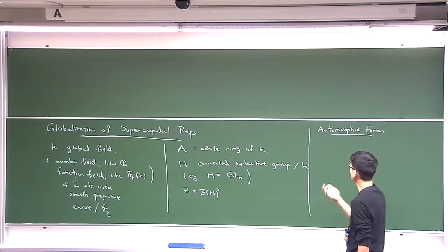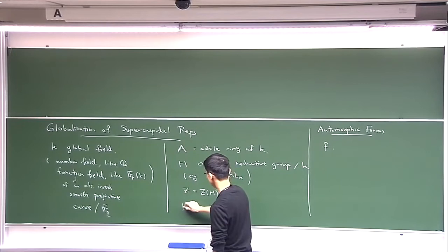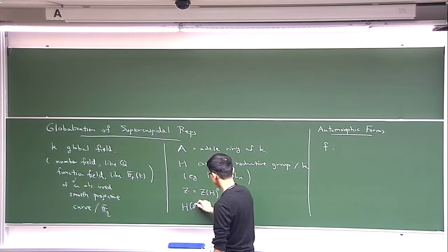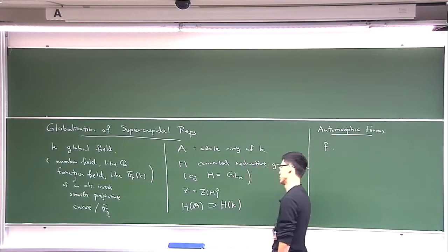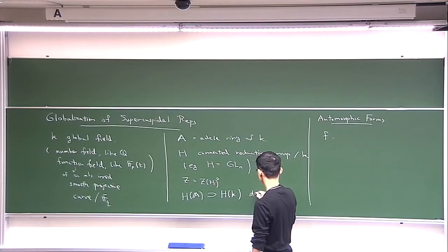Then I want to introduce a notion of automorphic forms. What is an automorphic form? I want to give a precise definition, but simply I'll say that it's a function f. Having introduced this, I can take points. Since the adele ring is a k-algebra, I can take the adele points of my group H. So I get a locally compact group and it will contain the set of k-rational points. In fact, this is a discrete subgroup.